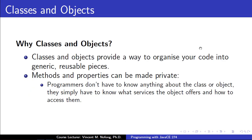We need to understand the concept of classes and objects because they provide a way we can organize our code into generic and reusable pieces. Additionally, methods and properties in the classes and objects can be made private. In this way, programmers do not have to know in detail how those methods work in the classes or objects - they simply need to understand the services they render and how those services can be used.